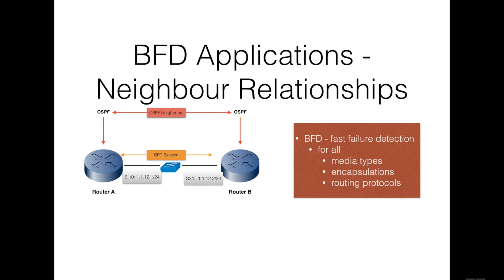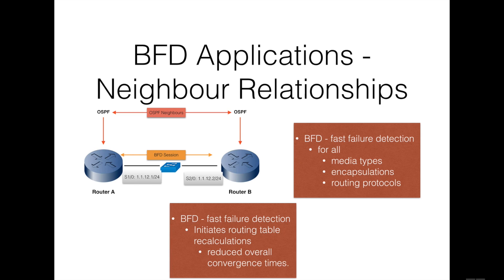Bidirectional Forwarding Detection provides fast peer failure detection times independently of all media types, encapsulations, and routing protocols. By sending rapid failure detection notices to the routing protocols in the local router to initiate the routing table recalculation process, BFD contributes greatly to reducing overall network convergence time.